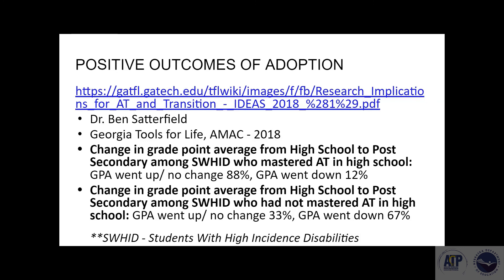This is something I really love to show off. Dr. Ben Satterfield out of Georgia Tools for Life did this great study. And sometimes it's hard to get the numbers to prove things, but I love that he looked at students with high-incidence disabilities. Those who had mastered AT in high school, when they went to college, their GPA either went up or had no change in 88% of students. It's almost 90%. That's pretty cool. And we saw the GPA go down with about 12%, which, you know, college does that to people. But for students who had not mastered their assistive technology, only 33% went up or saw no change, and 67% went down.